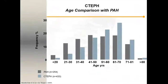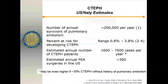The age distribution is a little different from primary pulmonary hypertension, which normally occurs in the second, third, and fourth decade. Chronic thromboembolic disease is seen more commonly in the fifth and sixth decade, although we do have patients from as young as five years old, up to our oldest patient who was 87.